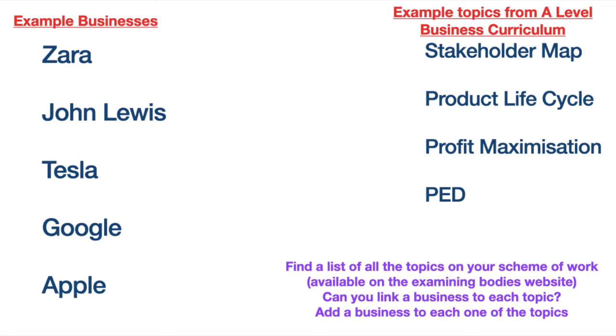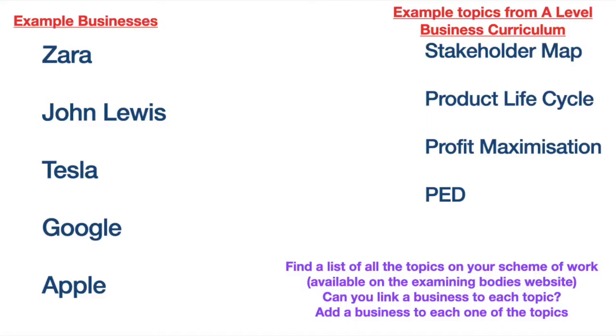In terms of how to revise specifically: get the scheme of work from the examining board's website and download it — all the topics are listed in bullet points. Then pick about six or seven businesses from different industries. Don't forget to combine businesses that provide a product and businesses that provide a service. For example, looking at topics like Stakeholder Map, Product Lifecycle, Profit Maximisation, and Price Elasticity of Demand, you could use businesses like Zara, Google, John Lewis, Tesla, and Apple. You should be able to talk about those topics using one of those businesses.